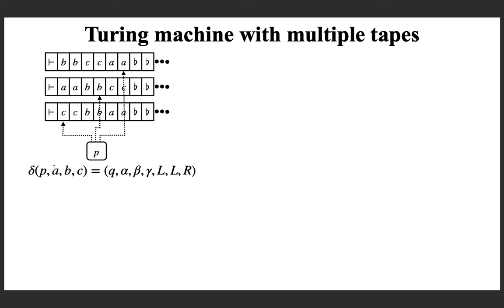A transition function looks like this: from state P, for the symbol in the first tape, the symbol in the second tape, and the symbol in the third tape, you need a transition. It defines what is the next state in the control unit, what symbol you are going to replace in the first tape, in the second tape, and in the third tape.